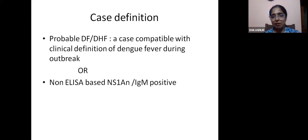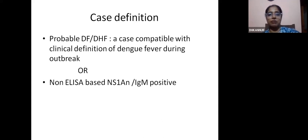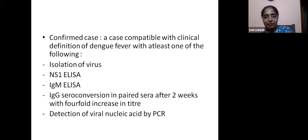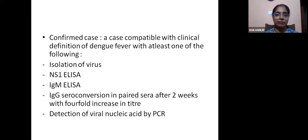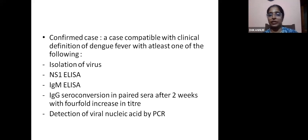Case definition: probable dengue fever is a case compatible with clinical definition of dengue fever with non-ELISA-based NS1 antigen or IgM positive — that is the CART test done at the periphery. A patient with symptoms suggestive of dengue fever with a positive CART test is a probable case. Confirmed cases require ELISA-based NS1 antigen, IgM ELISA, virus isolation, or PCR. Antigen-based test should be done in the initial part of the fever — within the first 5 days. After 7 days, we use antibody-based testing.